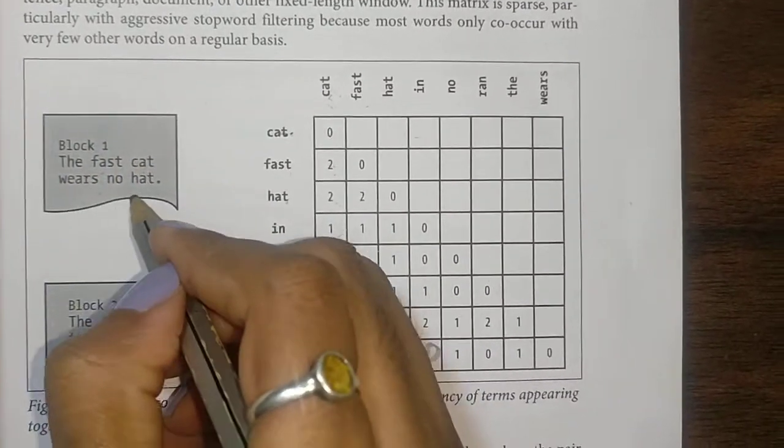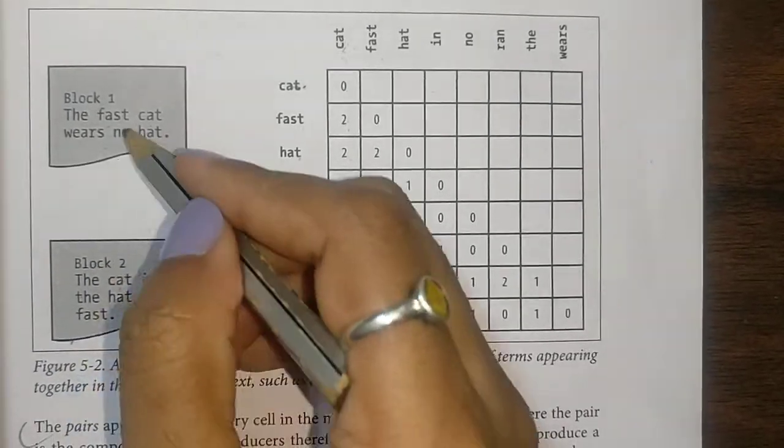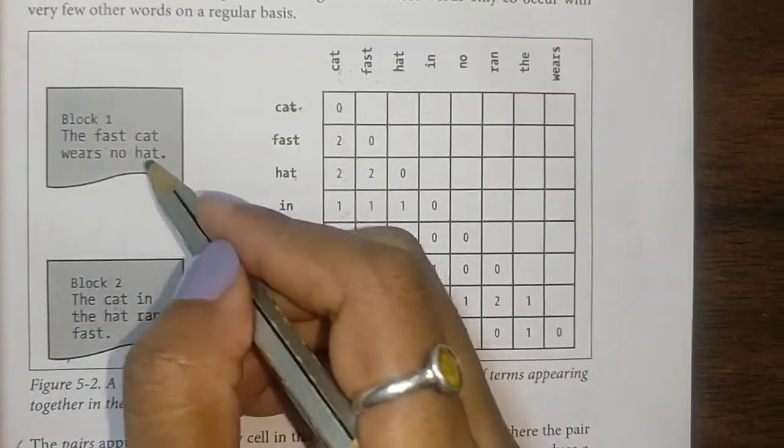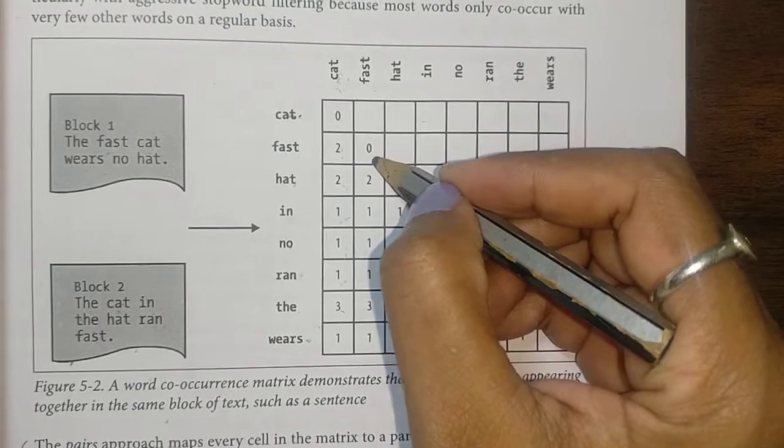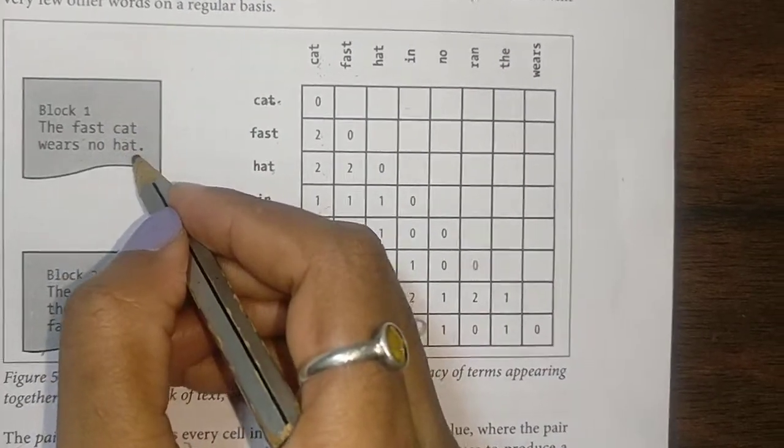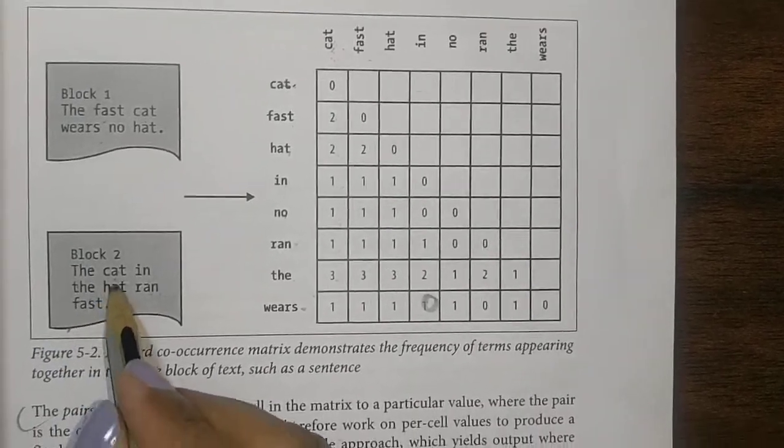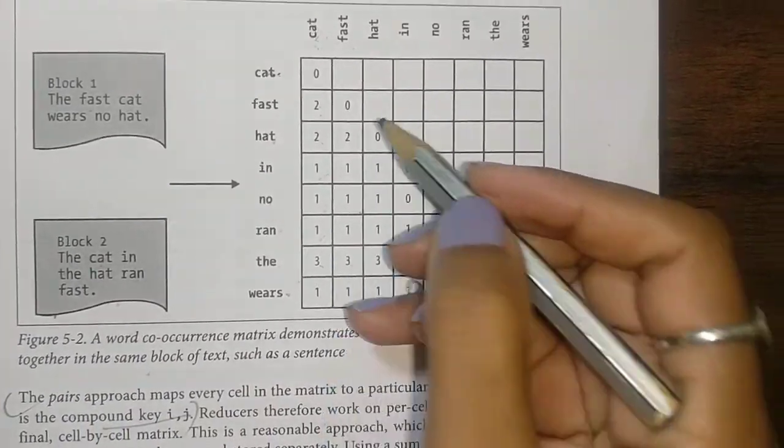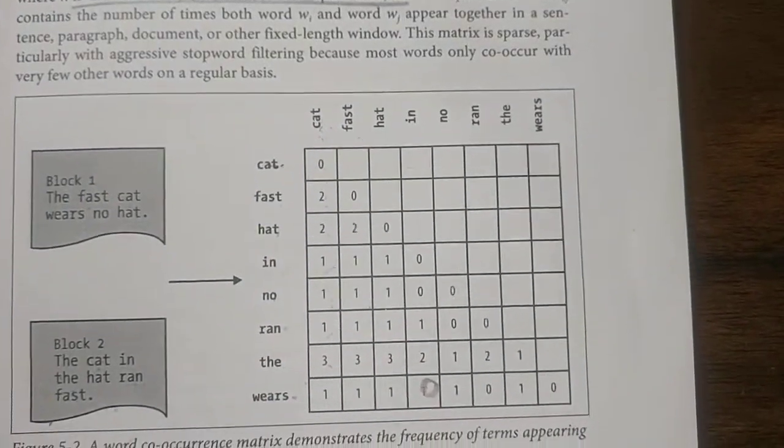Please note we are looking at only the occurrence in the same sentence. Although fast is there in both sentences, it is not coming together, so fast and fast is zero. Fast and hat: fast and hat once, and fast and act twice, so we wrote it as two. This is quite self-explanatory and easy to construct.